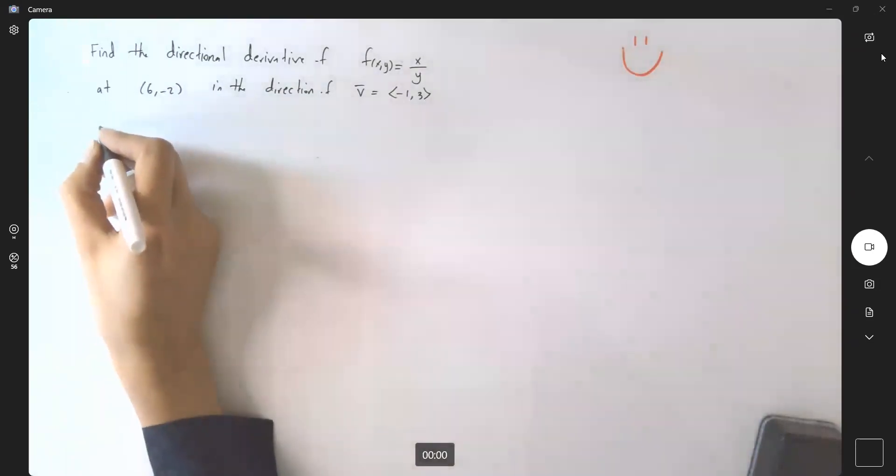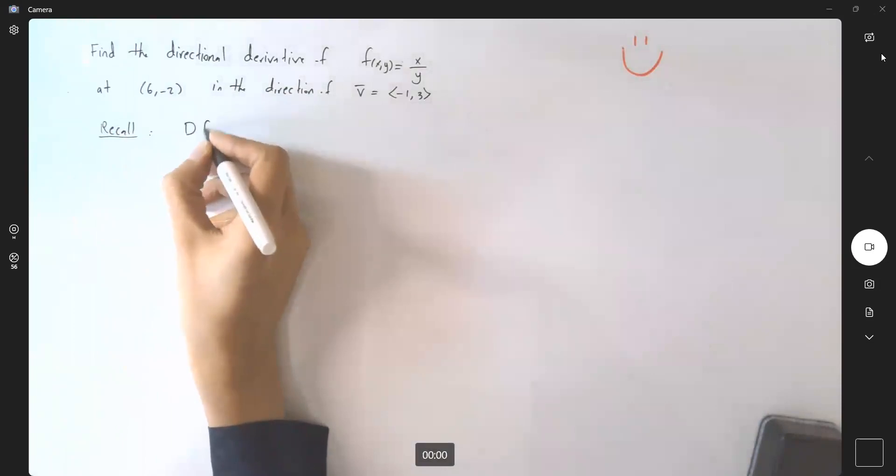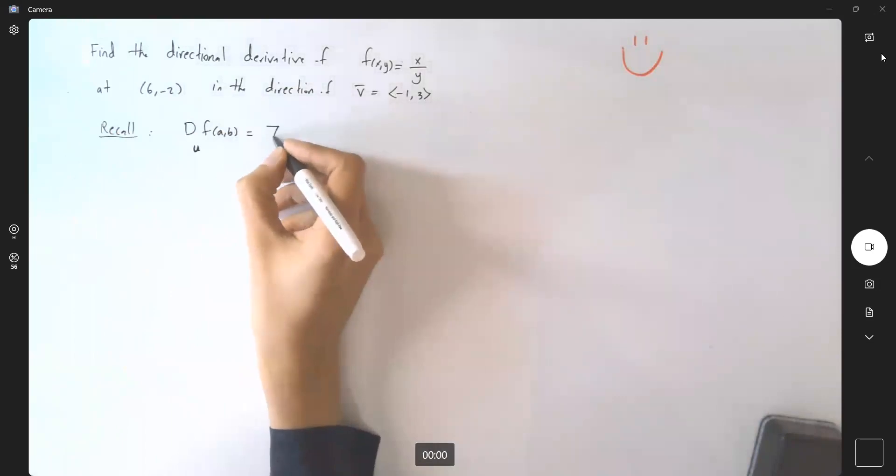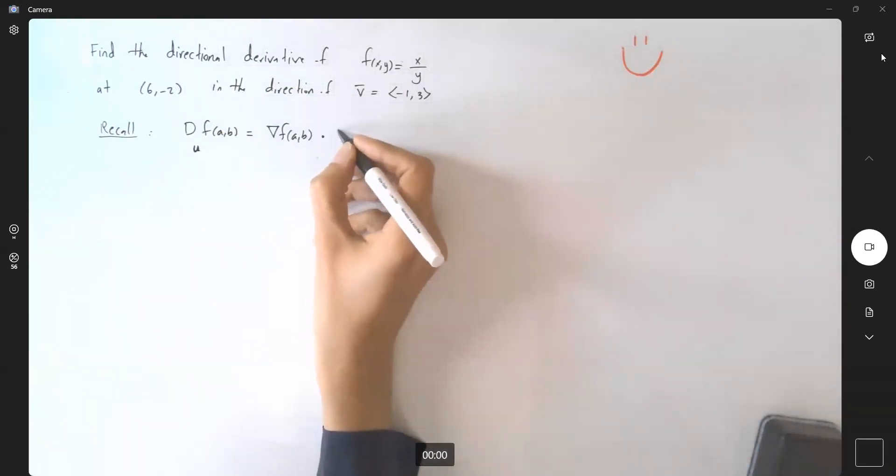Remember that. Recall, the directional derivative of a function in the direction of a unit vector u can be written as the gradient of f evaluated at (a, b) dot the unit vector u.